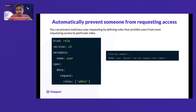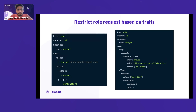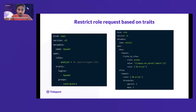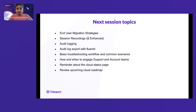You can also automatically prevent users from requesting access to certain roles by defining roles that prohibit those requests entirely. Another consideration when architecting your RBAC on Teleport is using traits — for example, if you have a group or username and you want to block access for certain users within that group, you can use traits to restrict access for a subset while granting it to others. This is an important consideration when building your Teleport security architecture.